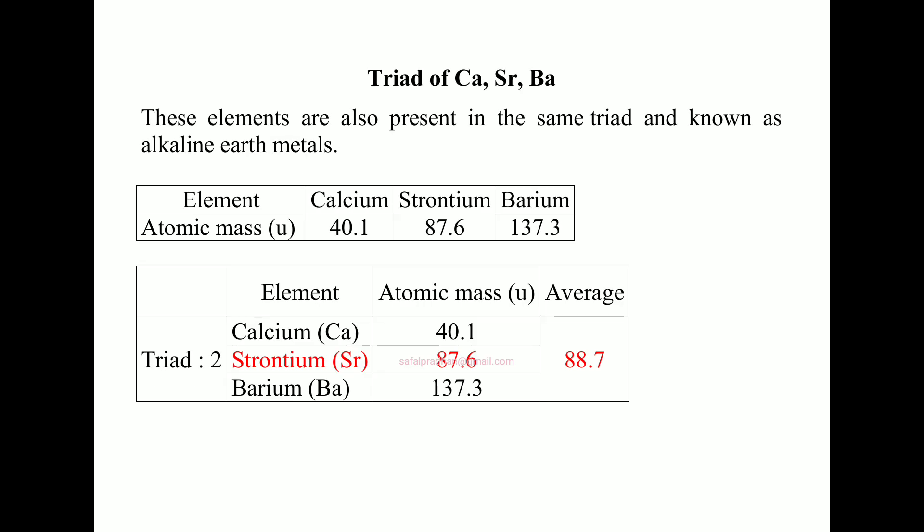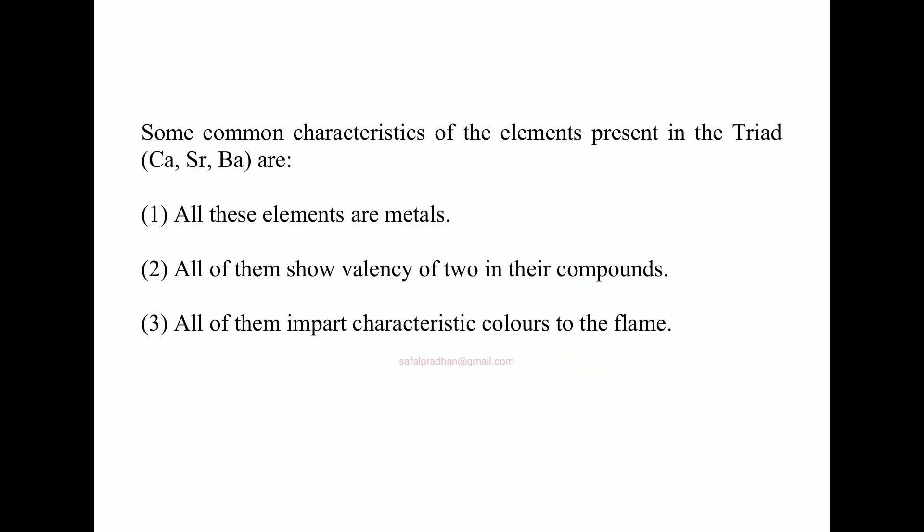Another triad he found was Calcium, Strontium, and Barium — these are called alkaline earth metals. The average of the atomic masses of Calcium and Barium came out close to Strontium's atomic mass of about 87.6–88.7. The inner group characteristics were similar: all three are metals, all show a valency of 2, and all of them show similar colors when introduced to a flame. Their chemical properties are similar.